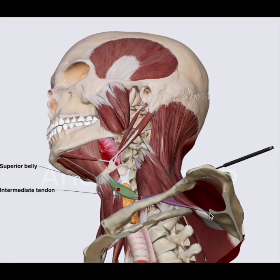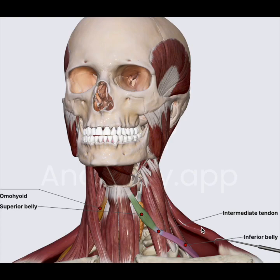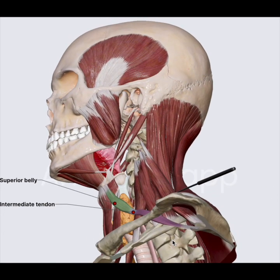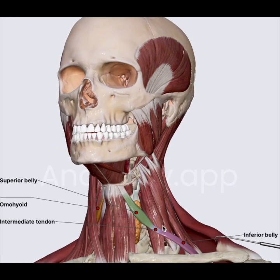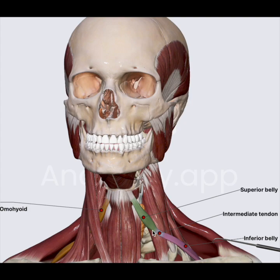So put this in your mind — it starts from here and goes over here. The omohyoid has two bellies: inferior and superior. The inferior belly arises from the superior border of the scapula and runs anteriorly and superiorly, ending at the intermediate tendon. The location of the intermediate tendon is very important: it is behind the sternocleidomastoid, and it is at the level of the arch of the cricoid cartilage. The superior belly originates from the intermediate tendon and courses superiorly to insert at the lower border of the body of the hyoid.